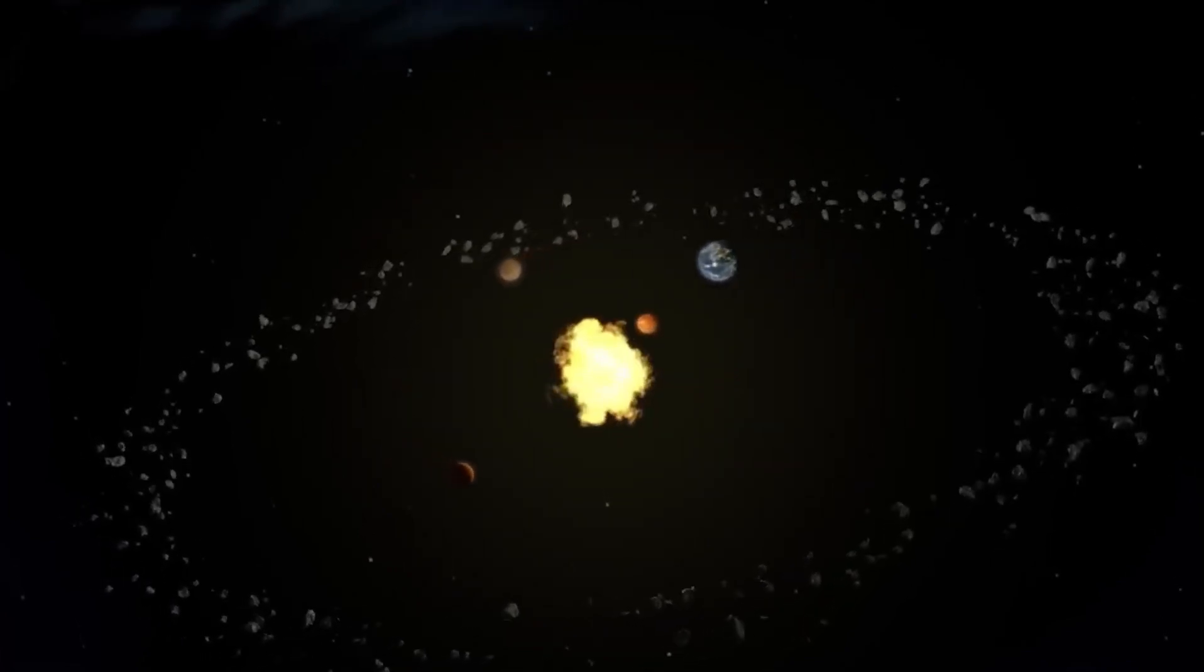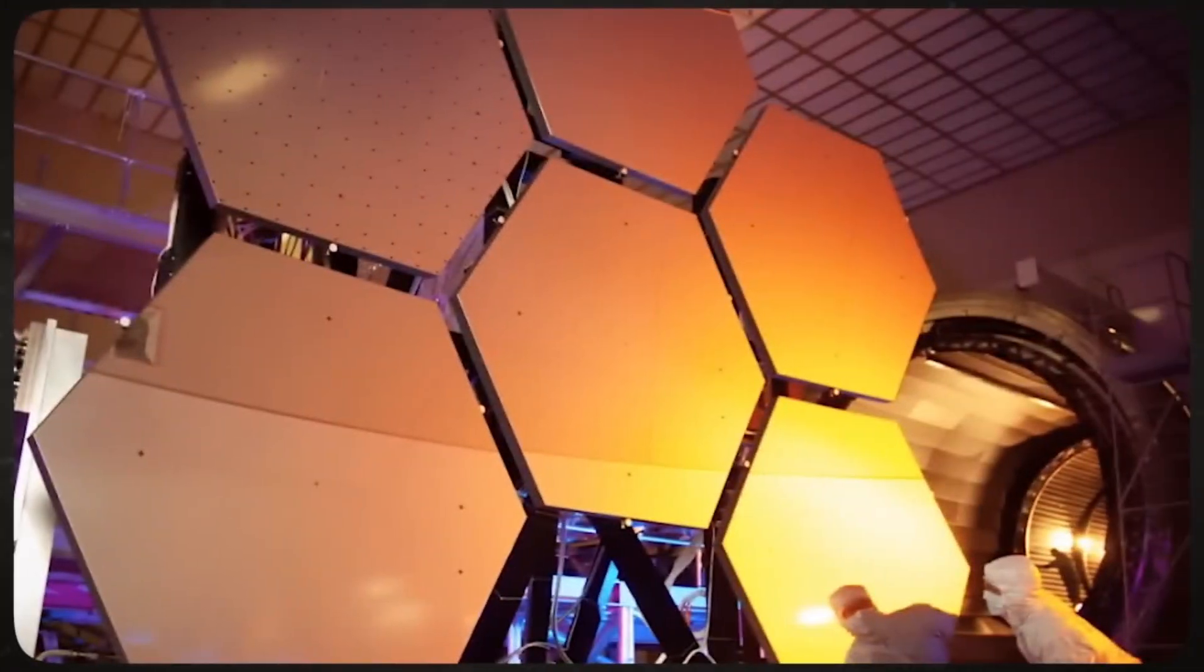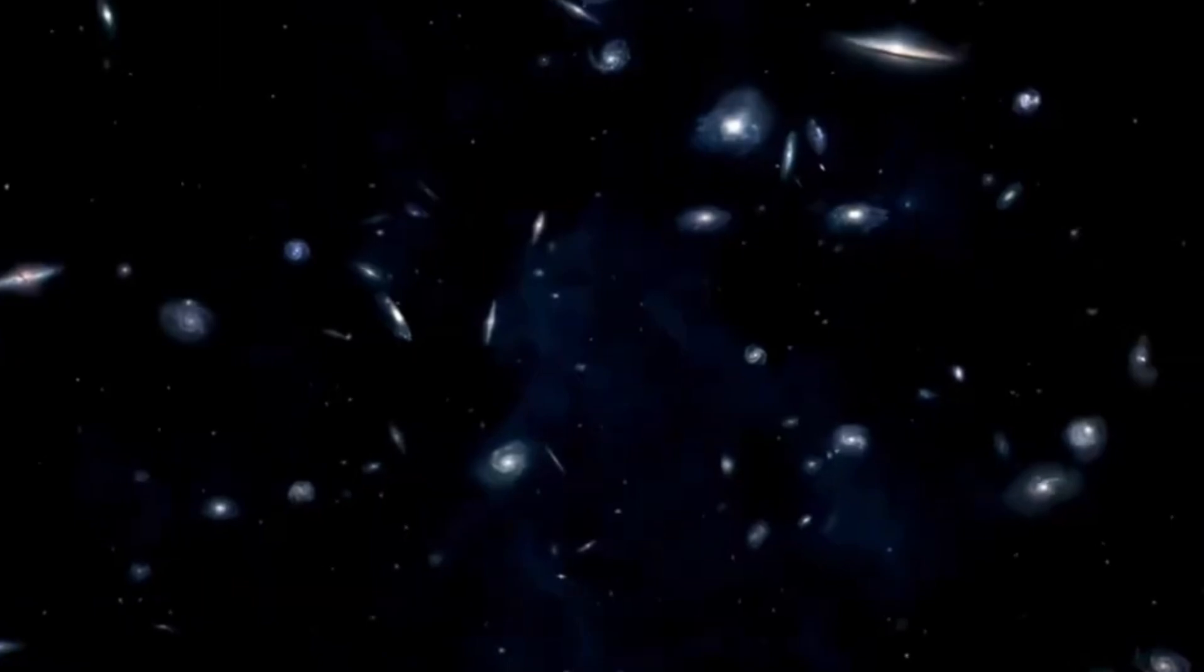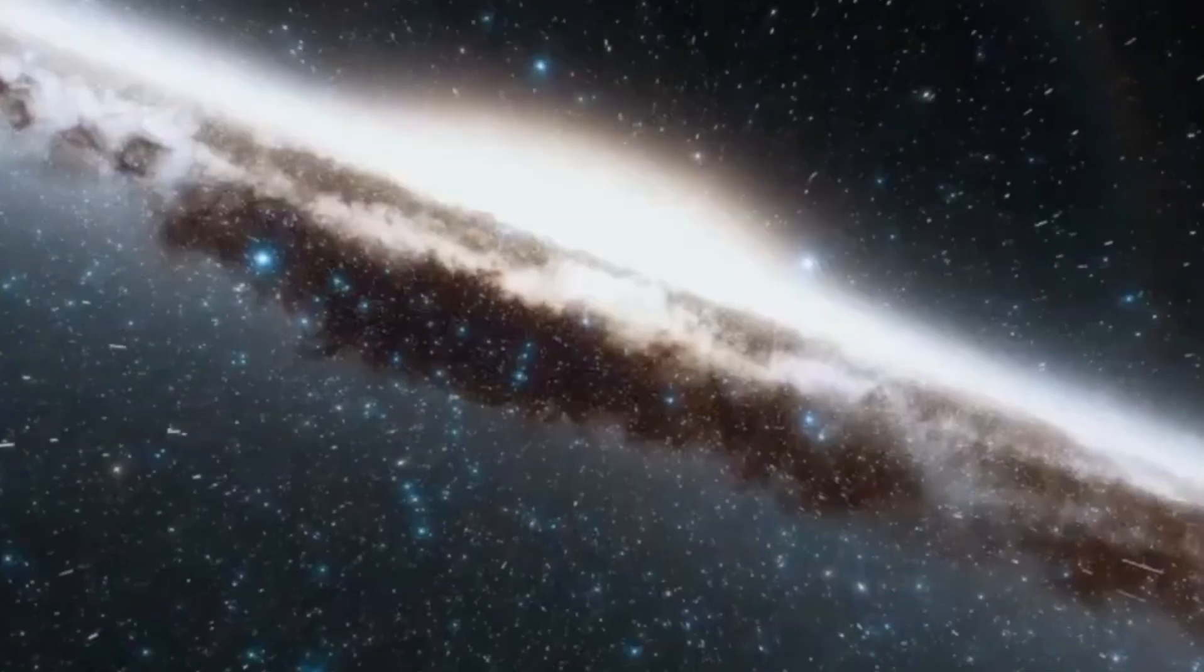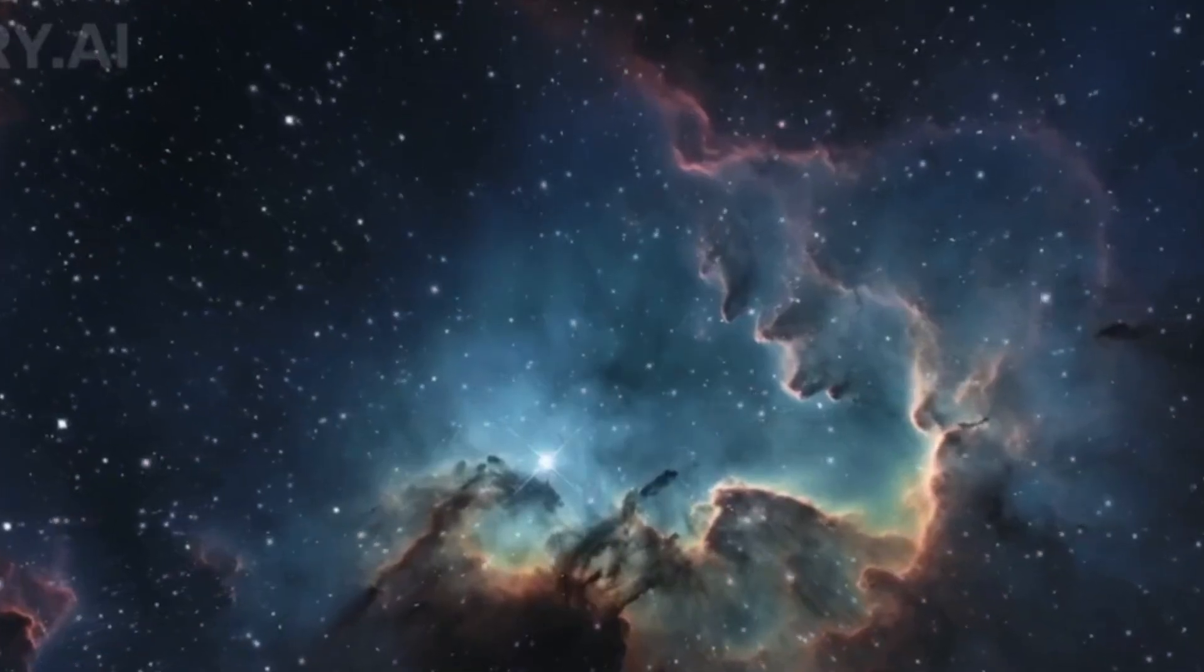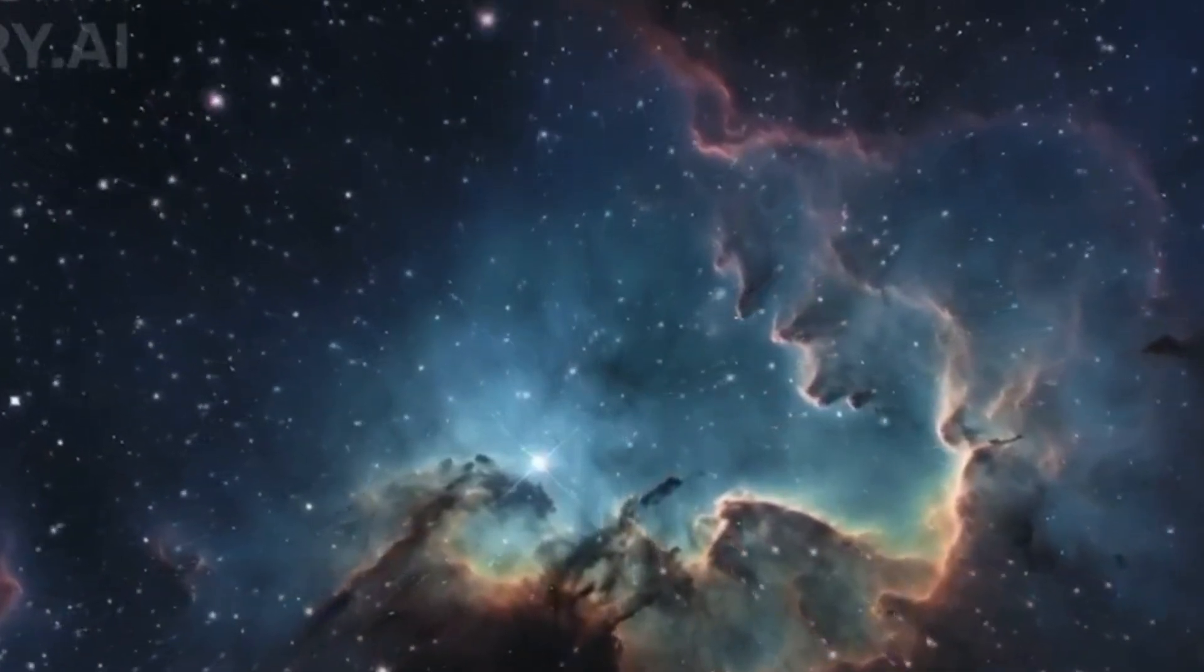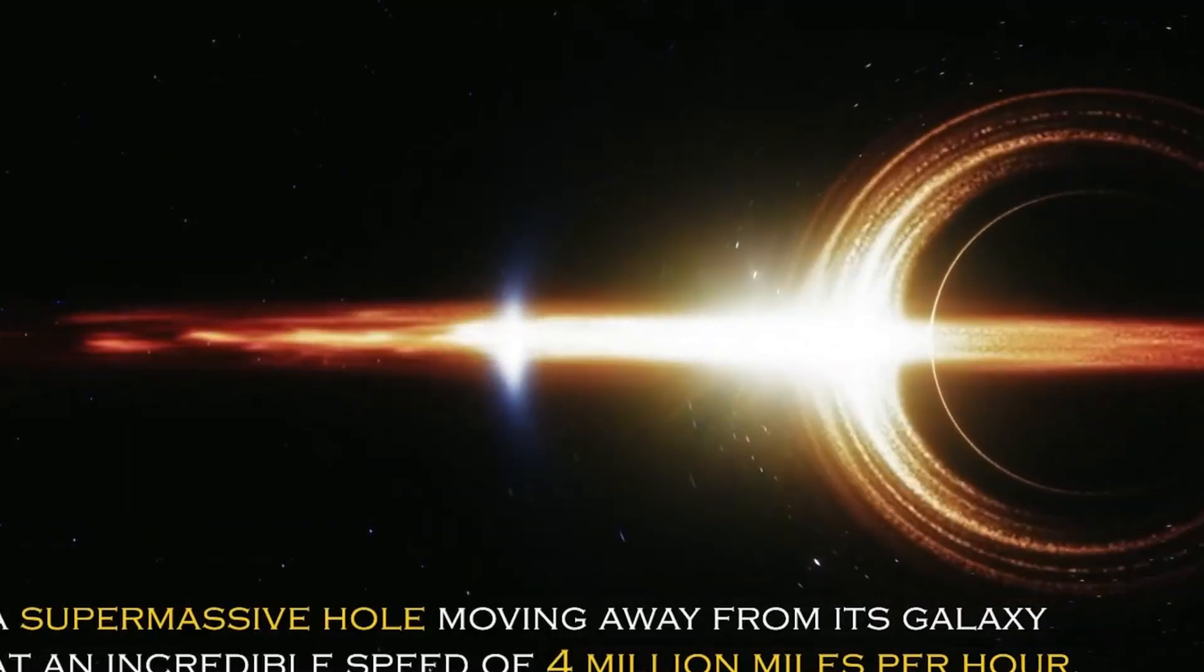In a surprising turn of events, NASA's James Webb Space Telescope has made a discovery that has astronomers around the world in awe. A few weeks ago, the telescope discovered the earliest known galaxy in the universe. But now it has detected something even more massive, a supermassive black hole moving away from its galaxy at an incredible speed of 4 million miles per hour. This latest discovery has very important implications and has generated much speculation among scientists and space enthusiasts about what it means for our understanding of the cosmos.